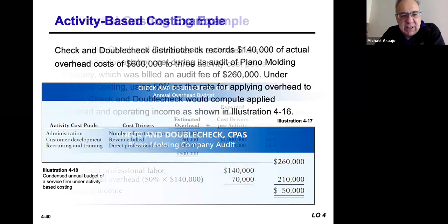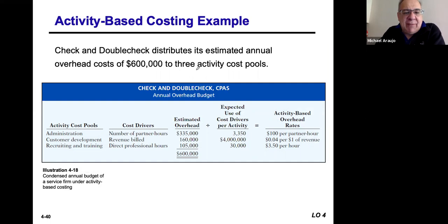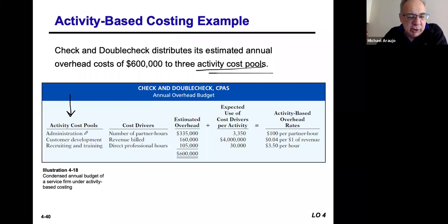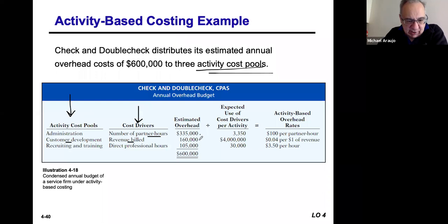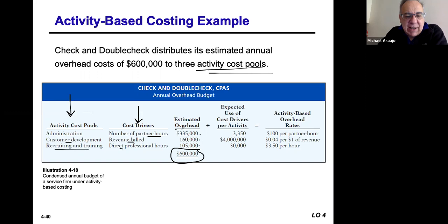What if they used ABC? In order to use ABC, they have to identify the activity cost pools. The first activity cost pool is the administration of the job, with the cost driver being the number of hours that partners are working to administer the business. Estimated overhead is $335,000. The second activity cost pool is to develop customers, with the amount of revenue billed as the driver and expected overhead of $160,000. The last activity is recruiting and training for their staff, with direct professional hours as the driver, allocated $105,000. So they have $600,000 in estimated overhead costs for these activities.